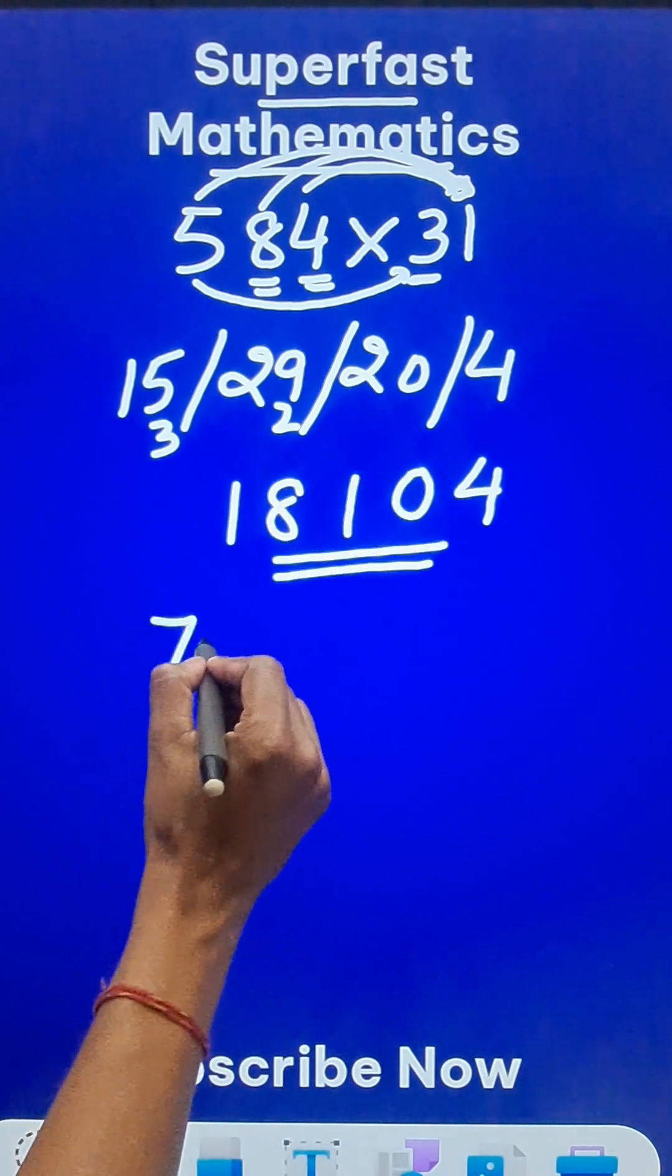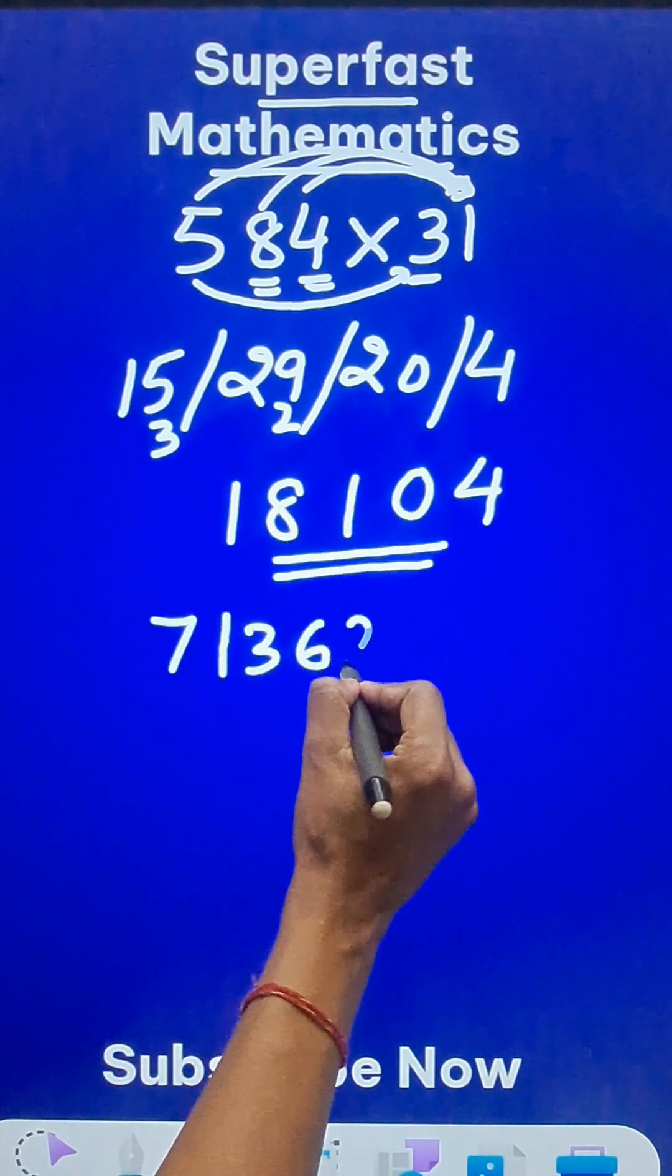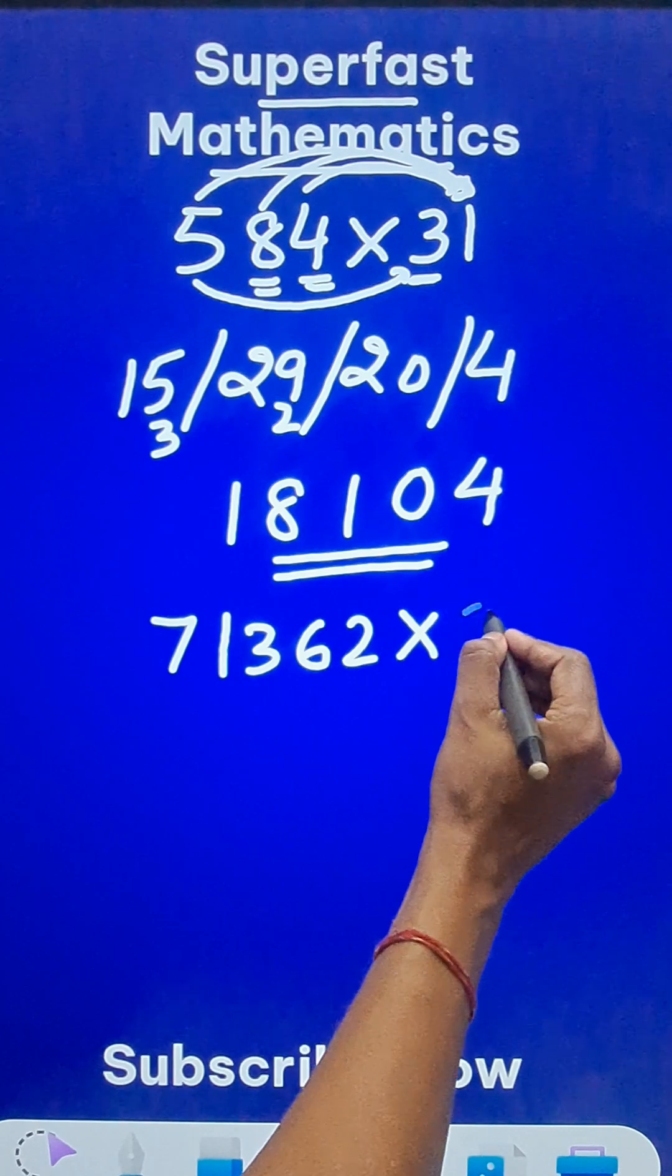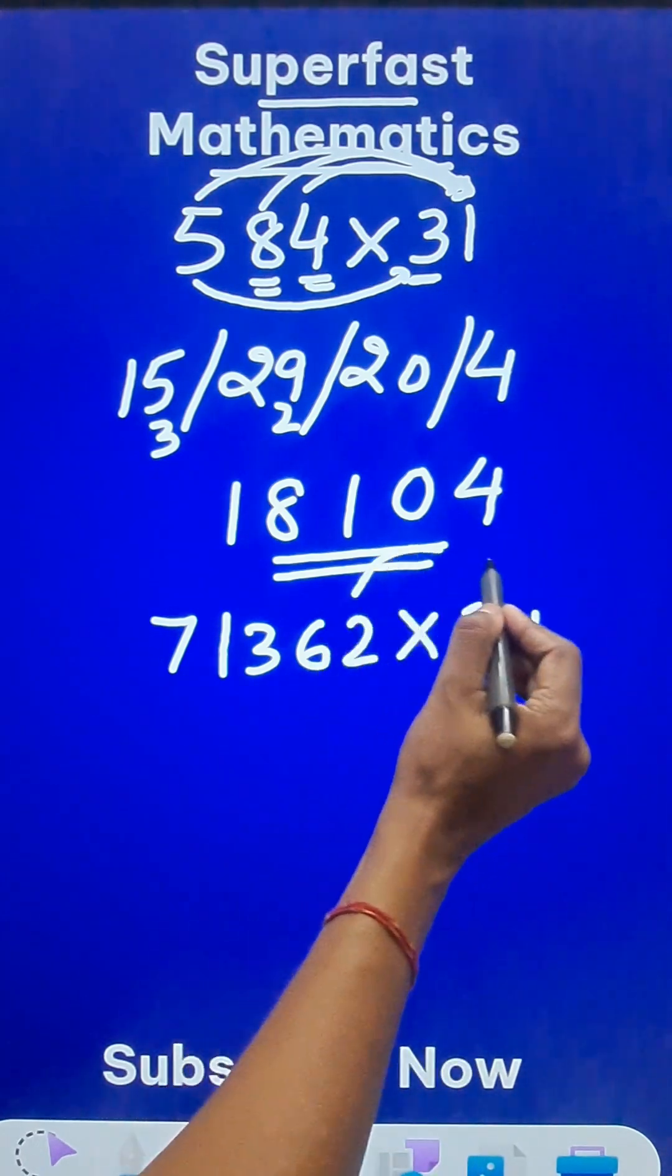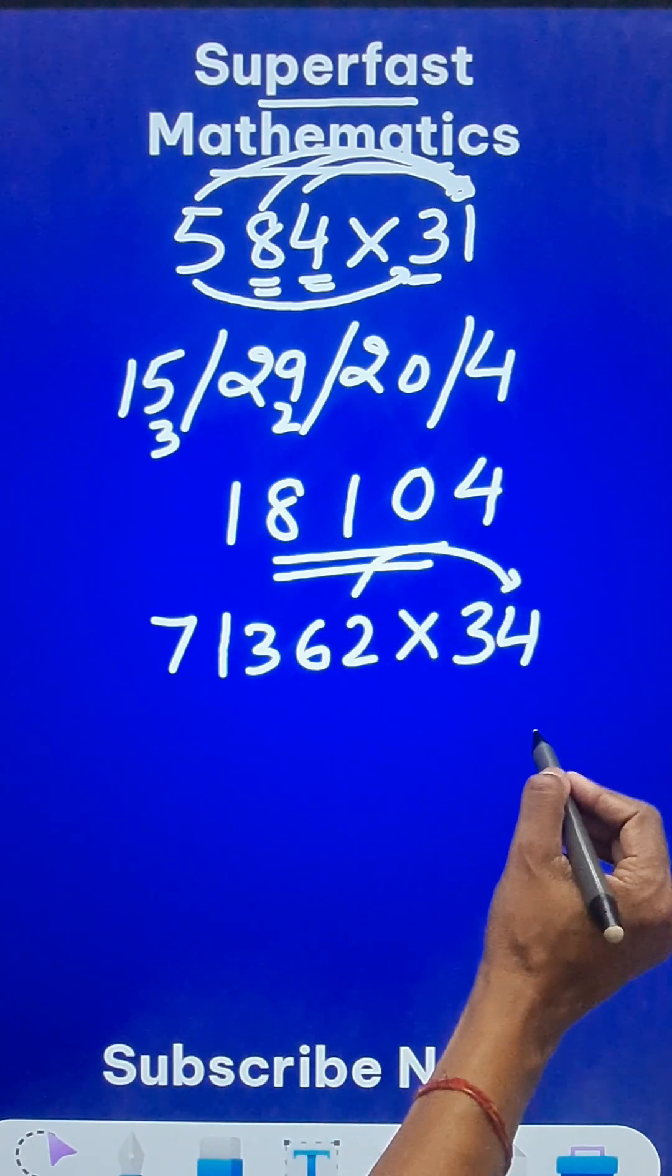Likewise, if the number is big like 71,362, and you need to multiply that by another number like 34. Now do 2 times 4. That is 8. So I will start with an 8.